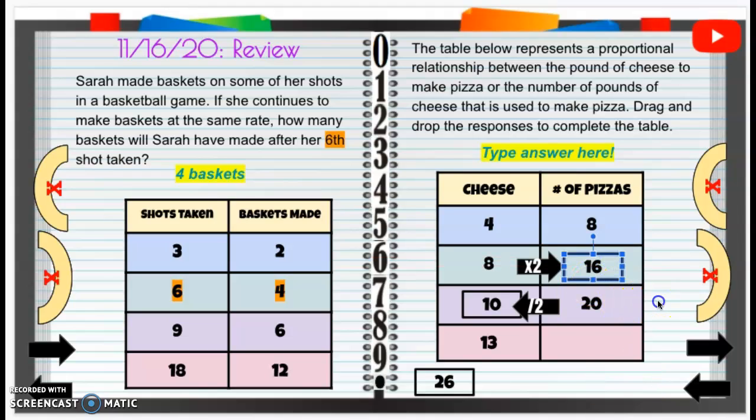And then the empty box on this last row. If I have the number of pizzas blank here, the pounds of cheese, 13 times two is going to be 26.